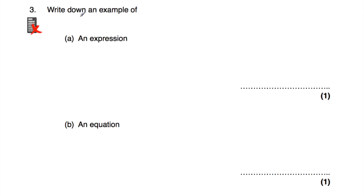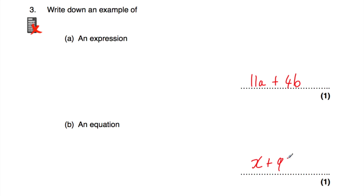Question number 3: we've been asked to write down examples of each term. For an expression, I'm going to write down 11a plus 4b — it doesn't have an equal sign or inequality sign, it's 11 lots of a plus 4 lots of b. For an equation, something we need to solve: x plus 99 is equal to 125. We could solve this by taking away 99 from both sides to get x equals 26, so that's an equation.